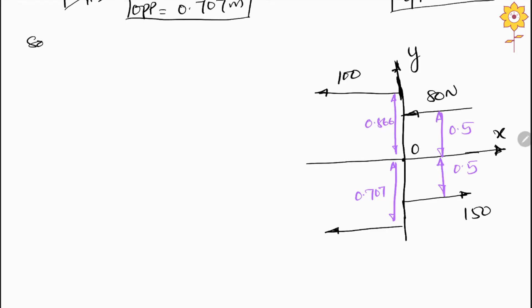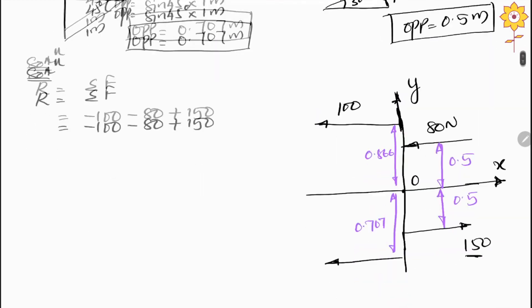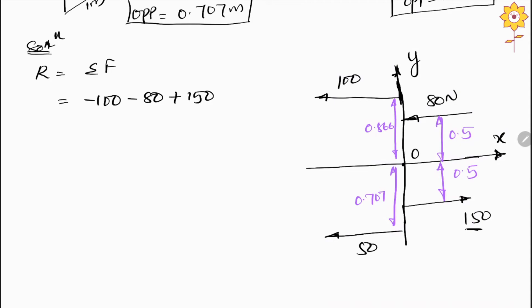In a parallel force system, the resultant force is the summation of all forces. The 100 N force acts right to left, so it is negative. The 80 N force also acts right to left, so minus 80. The 150 N force acts left to right, so positive 150. The 50 N force acts right to left, so it is also negative. Calculating this gives minus 80 N, meaning the resultant is 80 N acting from right to left.